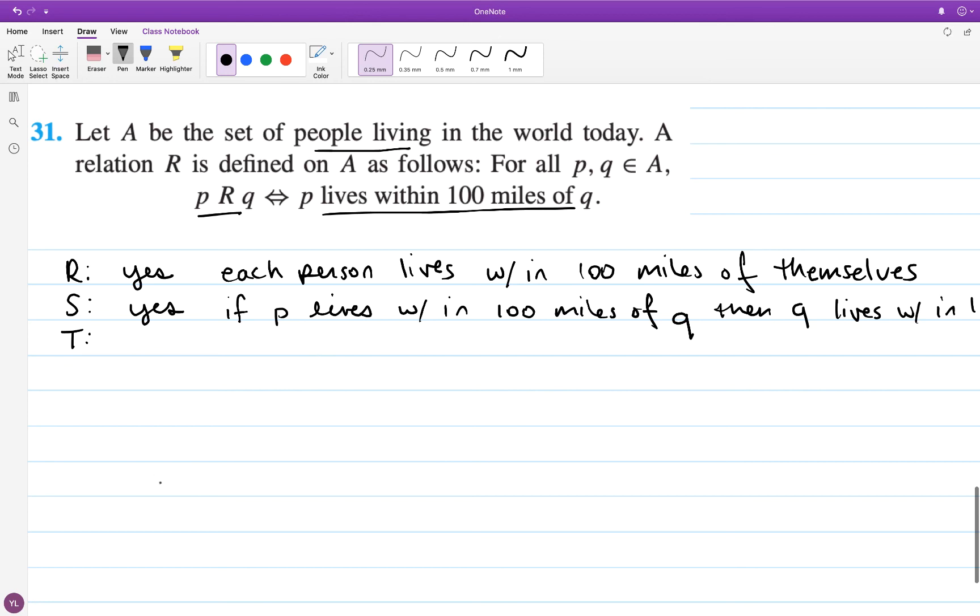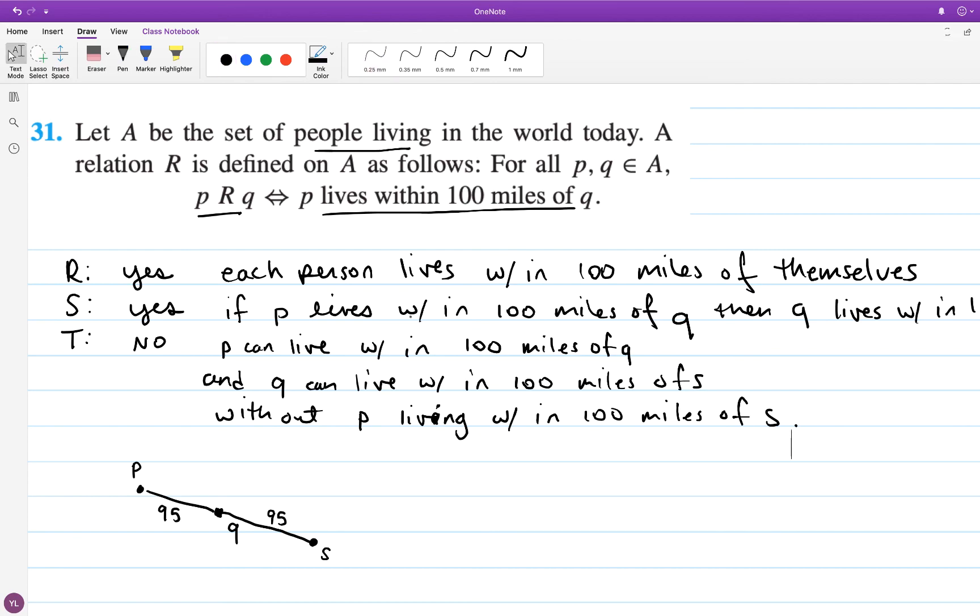No, I don't think so. I'm going to draw a little diagram here. Let's say person p does live within 100 miles of q. Let's say they're like 95 miles apart. And then maybe just in a direct line, q lives another 95 miles away from a person s. Then if this is a straight line, p lives way further away from s than 100 miles. So this relation is not transitive.